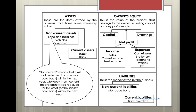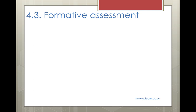Looking at the accounts in the accounting equation: under current assets you now have a new account for stock, included as current assets because you plan on selling your stock within the next year — that's the difference between non-current and current. Boerewors rolls you certainly wouldn't want to keep for more than a day. In owner's equity, to calculate net profit you have income and expenses. We now have a new account for sales as income, and a new expense account called cost of sales. You're now ready to go and try the formative assessment.